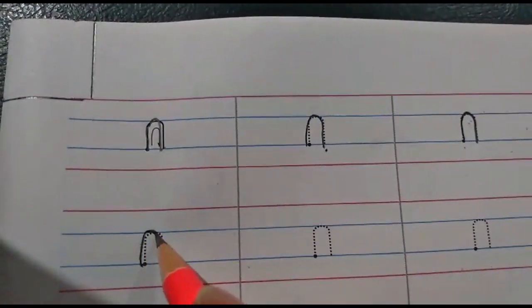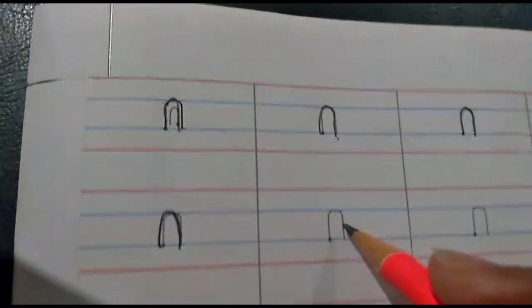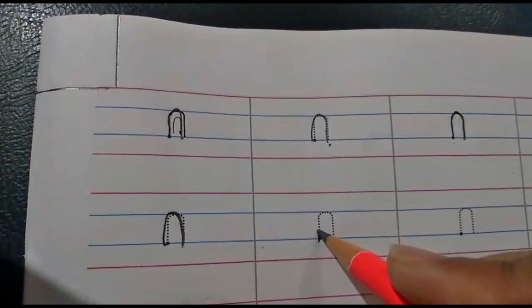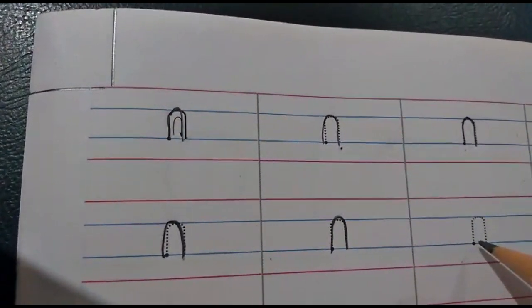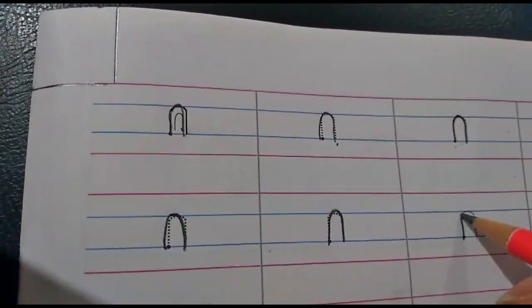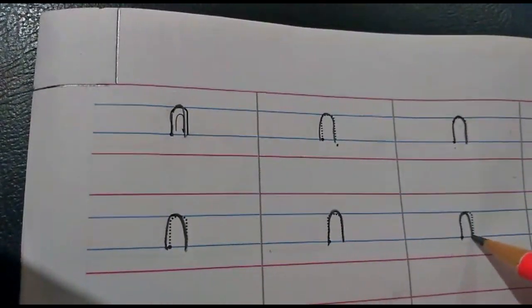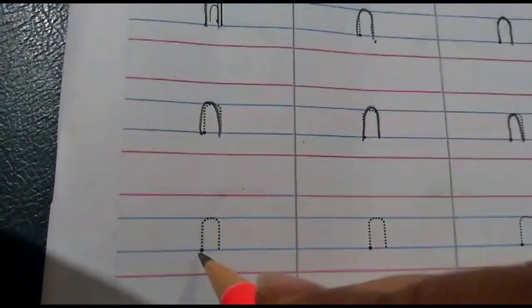Start from the blue line, go up, bumpity down. Start from the blue line, go up to the second blue—first blue line—and bumpity down. Okay children, so this is how we are going to write the 'n' pattern.